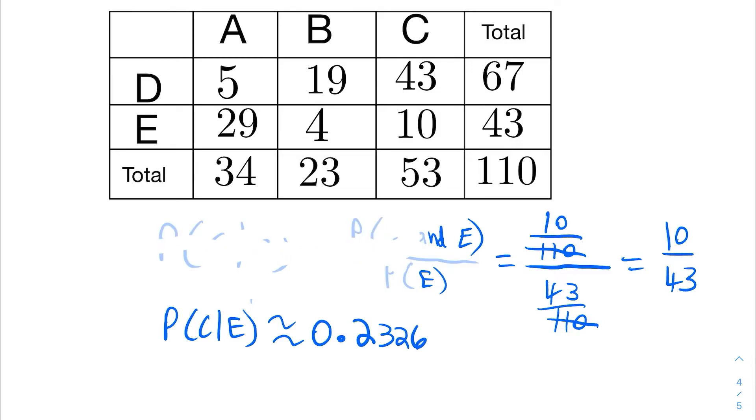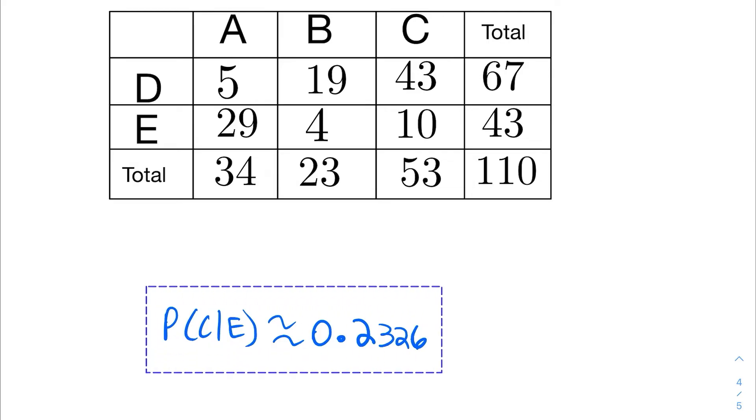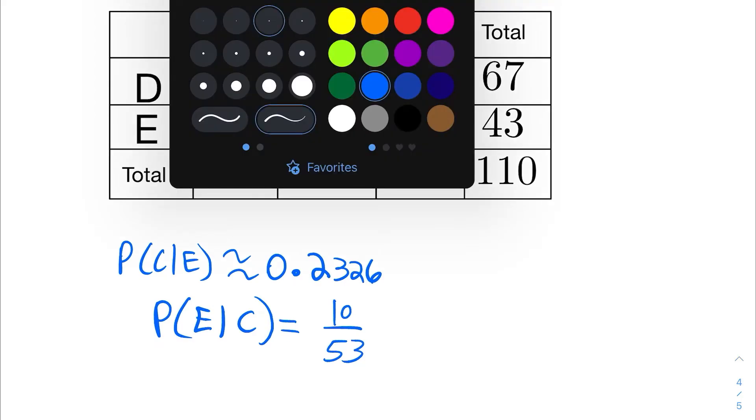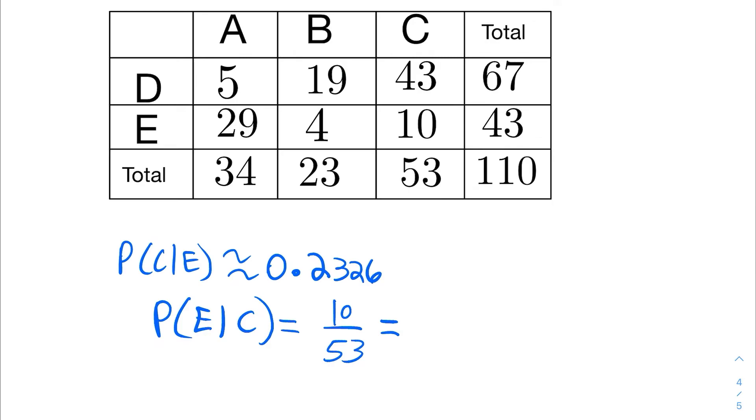What I want to do now is find the inverted probability, which is the probability of E given C. So I want to invert that probability and find the probability of E given that C has already occurred. Just like before, all I really have to do is look at the intersection of E and C, which we already had as 10, but then I have to divide by the sum of the column C. So here's column C, that's 53. It would have been 10 over 110 and 53 over 110, but the 110 will cancel, and this is approximately equal to 19 percent, 0.1887. So it turns out that this doesn't go in both directions. The probability of C given E is not the same as the probability of E given C.